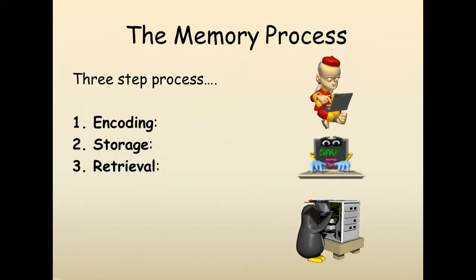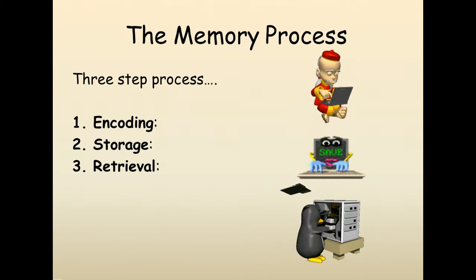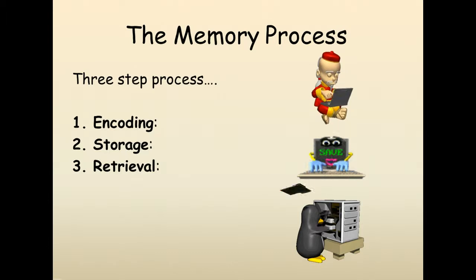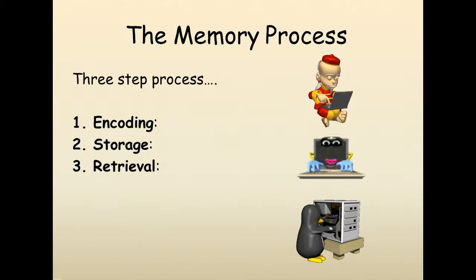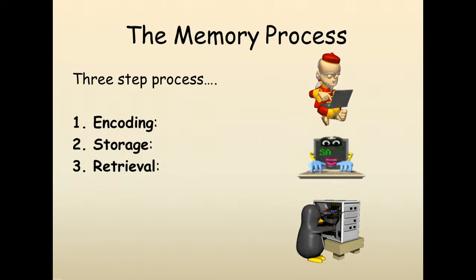The memory process occurs in a three-step process: encoding, storage, and retrieval. Encoding is the processing of information into the memory systems — for example, by extracting meaning. Storage is the retention of encoded information over time. Finally, retrieval is the process of getting information out of memory storage.